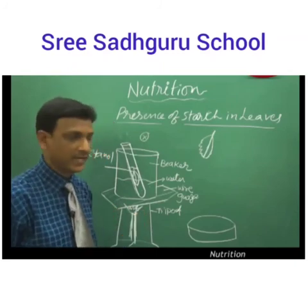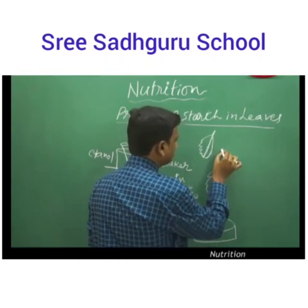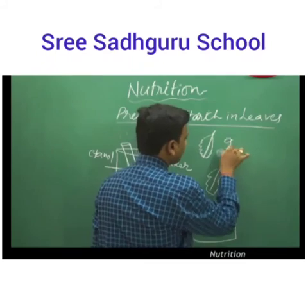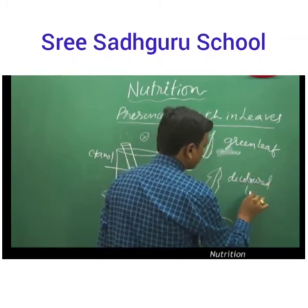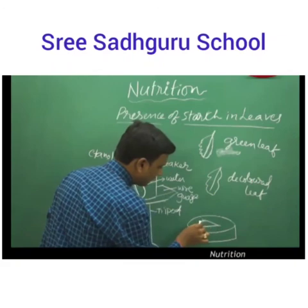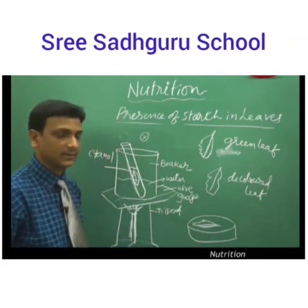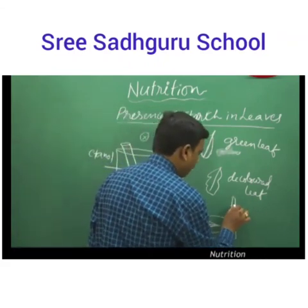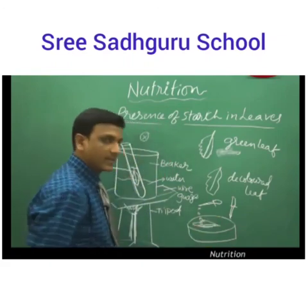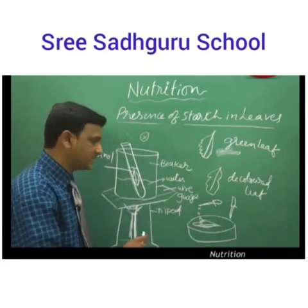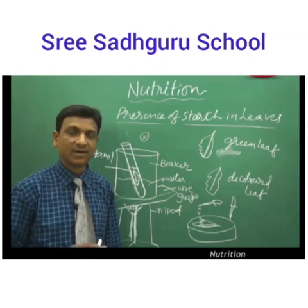Now we can stop the flame and take out the leaf. This is the original green leaf, and this is the decolored leaf. The decolored leaf is placed in a petri dish; we add some water to remove the alcohol, then add a few drops of iodine. The leaf turns dark blue in color, indicating the presence of starch. By this experiment we can prove that starch is present in green leaves.